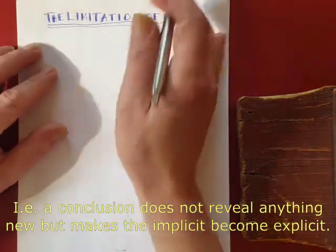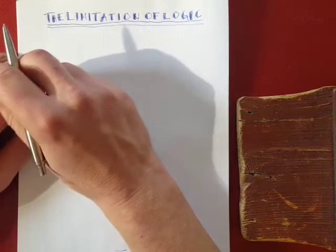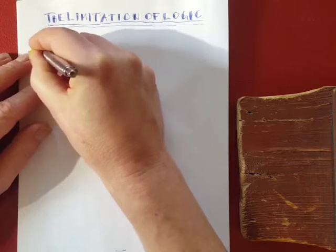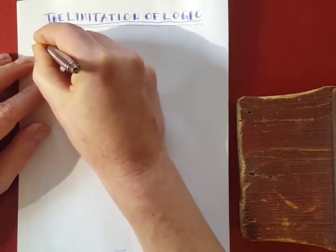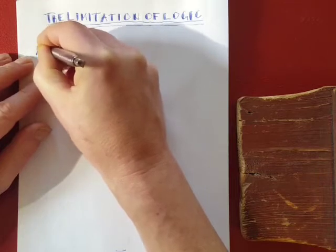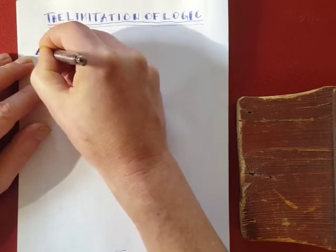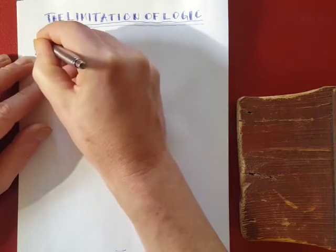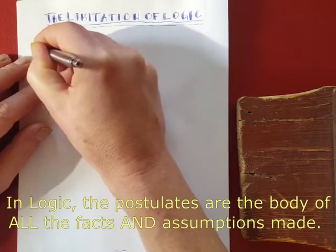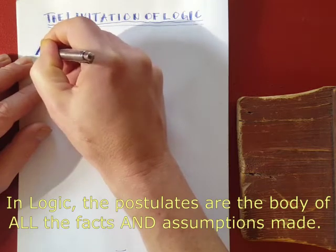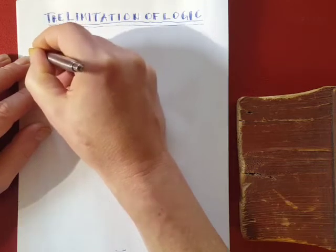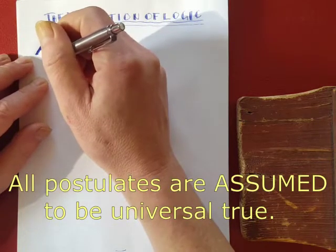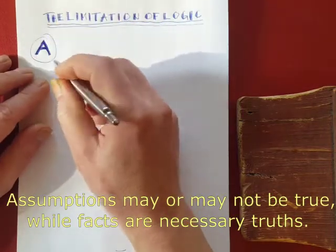For instance, if you assume something, let's call it you assume A. You assume A to be true. You have no proof of this, but it's an assumption. It's what in logic is called one of the postulates, or what we may call facts or assumptions. So this is one of your assumptions.